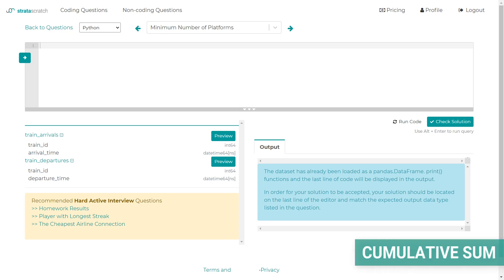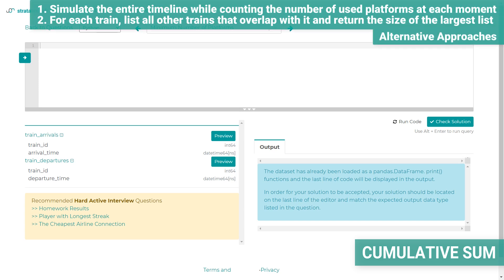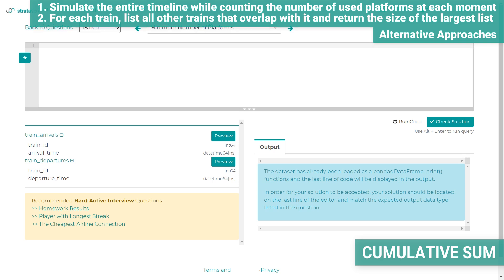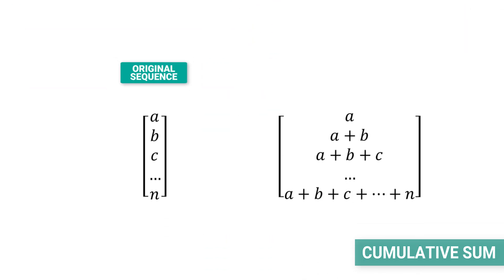Before writing code, let me show you the approach I'll take. There are multiple possible approaches. Since this is only one day's worth of data, we could loop over all the minutes of the day, simulating the timeline and counting platforms needed at each moment. Another solution could be iterating over the datasets twice, finding trains that overlap with each other. However, both of these approaches are overcomplicated and computationally expensive. Instead, I'll show a much shorter and more efficient solution using the cumulative sum.